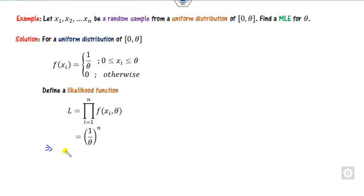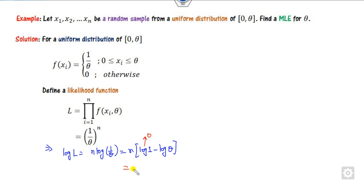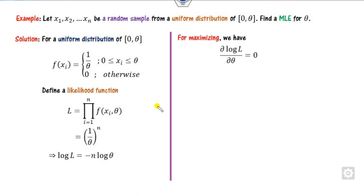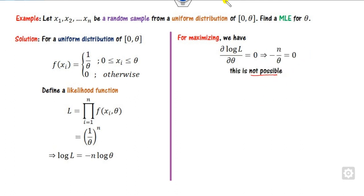Now you can take the logarithm on both sides to make calculation easier. It will be log of this, which I can write as log(1) minus log(theta). Since log(1) is 0, it will be minus n·log(theta). Now to maximize, you take the derivative and set it to 0, but you are unable to find a valid value of theta from that. Whenever it is not possible, we have to work with the order statistics.